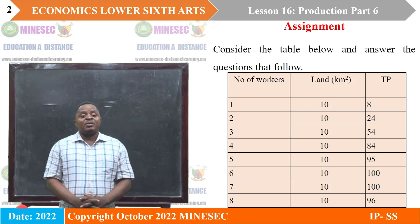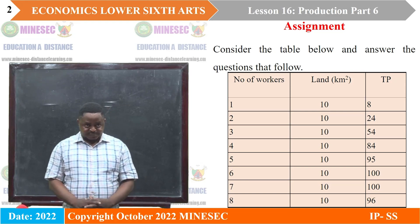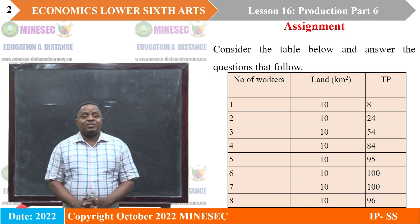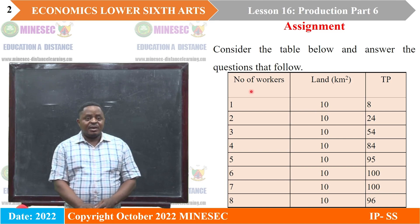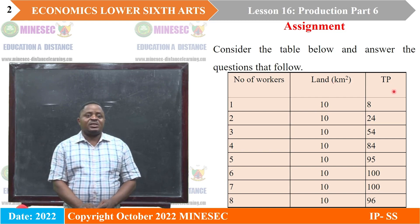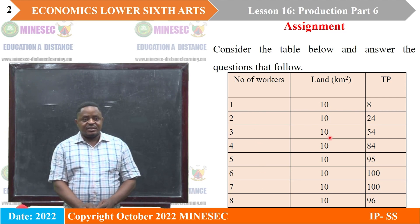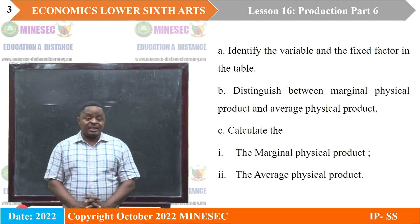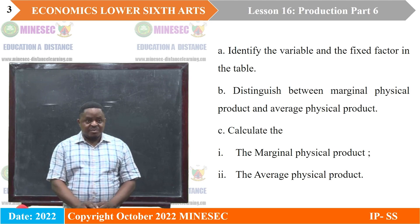Let us begin our lesson by correcting the assignment from our previous lesson. Consider the table below and answer the questions that follow. We have number of workers — that is labor — and we have land. We have total product, TP. The number of workers is changing while land remains the same, because it is a fixed factor. Identify the variable and the fixed factor in the table.